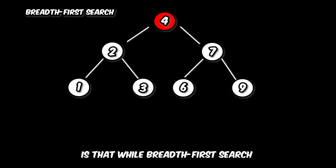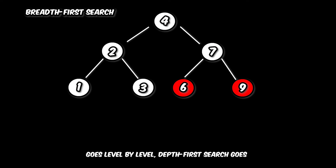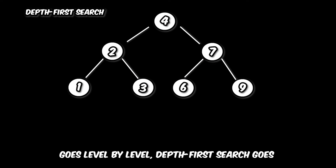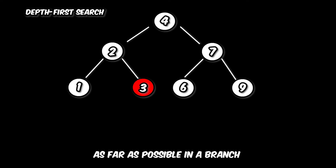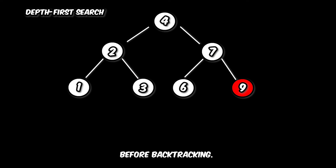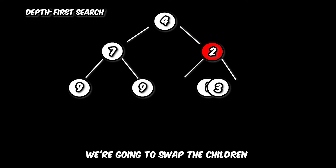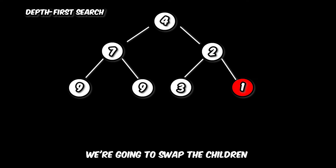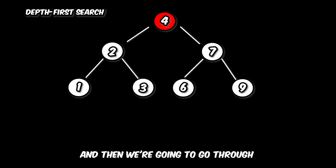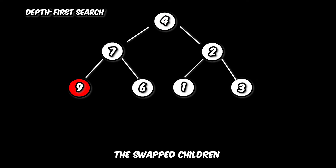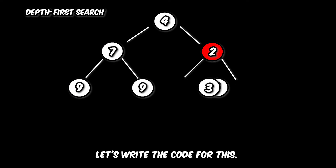Now let's start talking about the depth-first search way. The only difference here is that while breadth-first search goes level by level, depth-first search goes as far as possible in a branch before backtracking. So for this problem, every node that we visit we're going to swap the children, and then we're going to go through the swapped children.